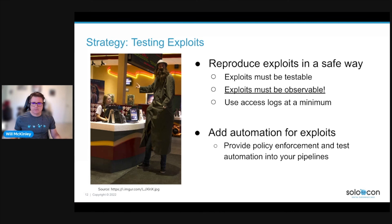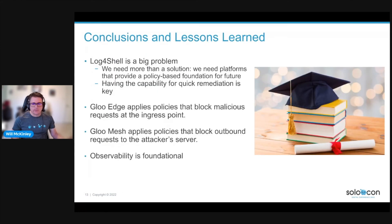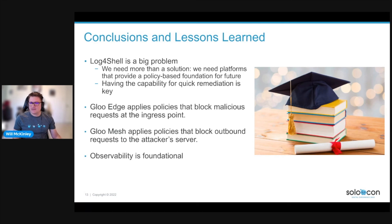Our conclusions and lessons learned: Log4Shell is a big problem and we need more than just a software solution. We need platforms that create policies to remediate unknown vulnerabilities, and having the capability for quick remediation is key. Glue Edge can apply policies to block inbound requests and keep you safe. Glue Mesh can apply policies to block outbound requests from within your cluster should the attack happen from within. Lastly, observability and testability are foundational. If you like what you heard today, please get in touch with us and see how we can help you protect against the next vulnerability. Thank you.